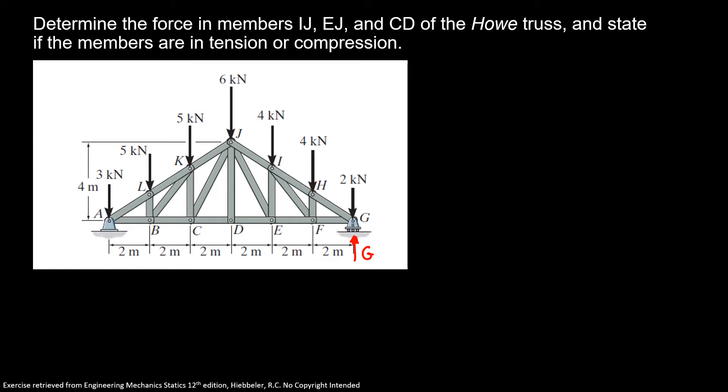Here I'm going to do the sum of moments about A equals 0. And here I'll have 12G minus 2 times 12 minus 10 times 4 minus 8 times 4 minus 6 times 6 minus 4 times 5.